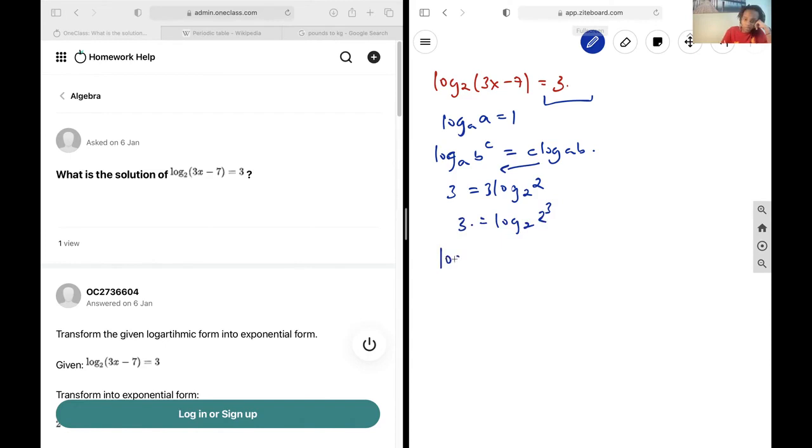So now let's rewrite what we have. So now we have 2 log₂s, which means that what is inside them must be equal. So let's just set them equal: 3x - 7 = 2³, and that's going to give us 8.